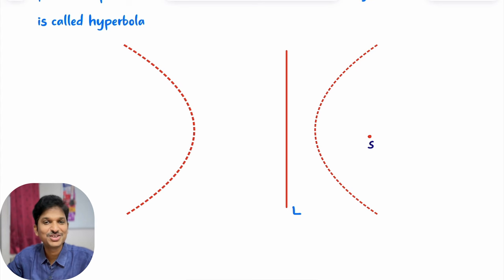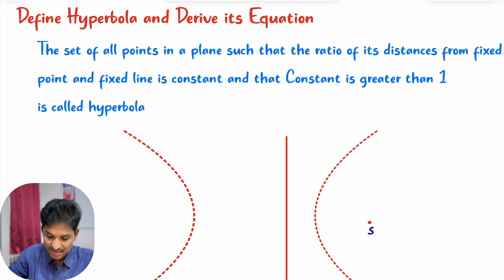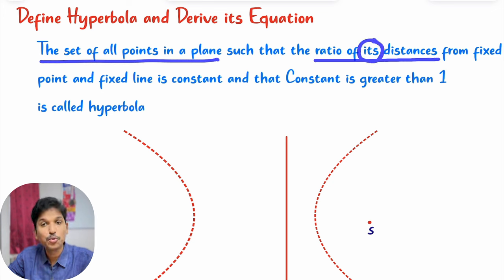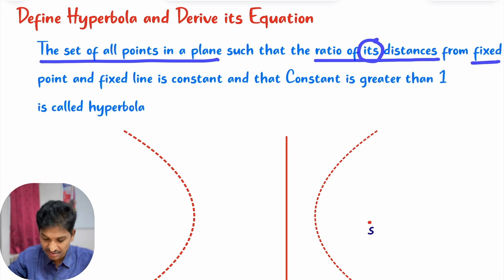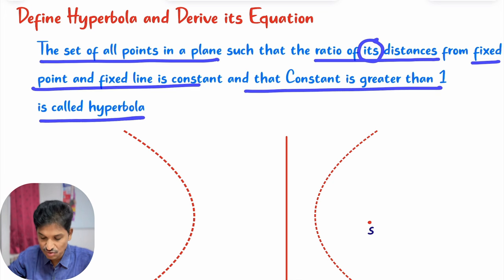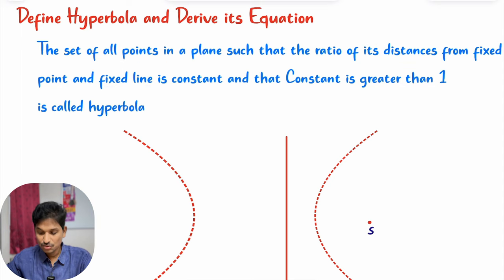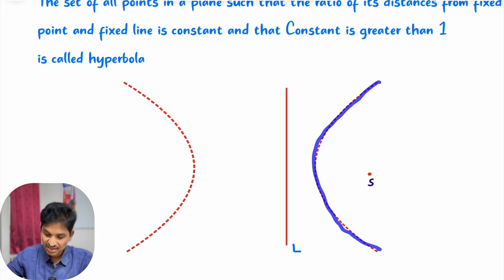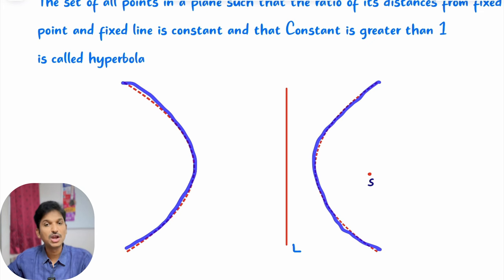Now let us see the definition of hyperbola. The set of all points in a plane such that the ratio of its distances from a fixed point and a fixed straight line is constant and that constant is greater than 1 is called hyperbola. So the shape you are observing here — this is the shape of the hyperbola.